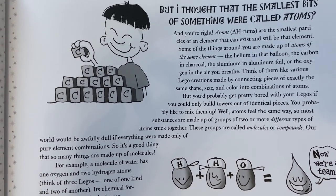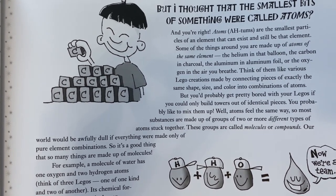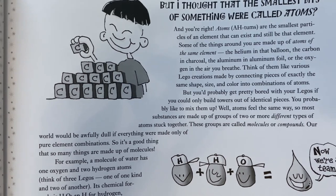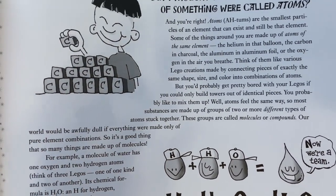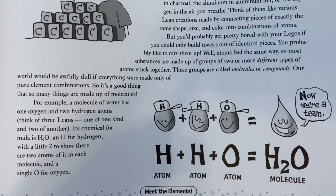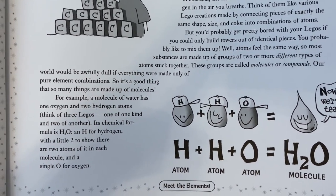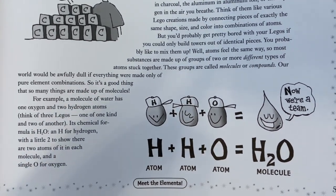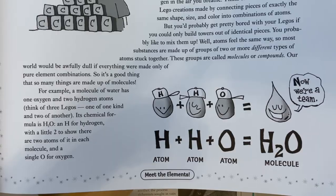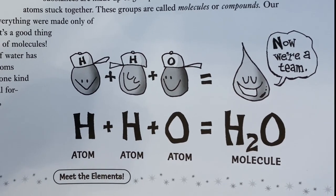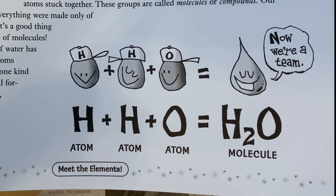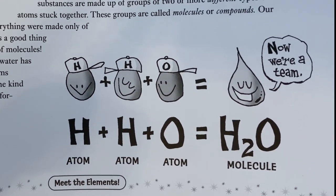Some things around you are made up of atoms of the same element — the helium in a balloon, the carbon in charcoal, the aluminum in aluminum foil, or the oxygen in the air you breathe. Think of them like various Lego creations made by connecting pieces of exactly the same shape, size, and color. Most substances are made of groups of two or more different types of atoms stuck together — these groups are called molecules or compounds. For example, a molecule of water has one oxygen and two hydrogen atoms; its chemical formula is H₂O.